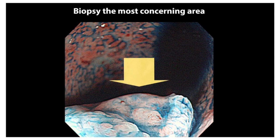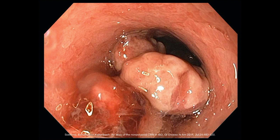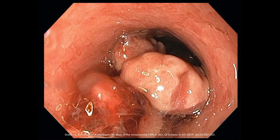Let's talk about some limitations of chromoendoscopy. This can be problematic when examining a colon segment with multiple large pseudopolyps, and in patients with a stricture in the setting of ulcerative colitis. In a segment with multiple pseudopolyps, it is very hard to identify an associated dysplastic lesion in the surrounding area. Similarly, with a stricture, it is difficult to determine whether an abnormal area represents ongoing inflammation or a dysplastic pathology.